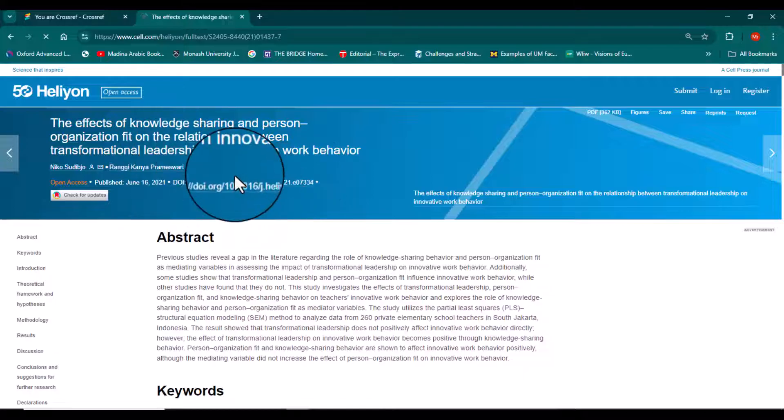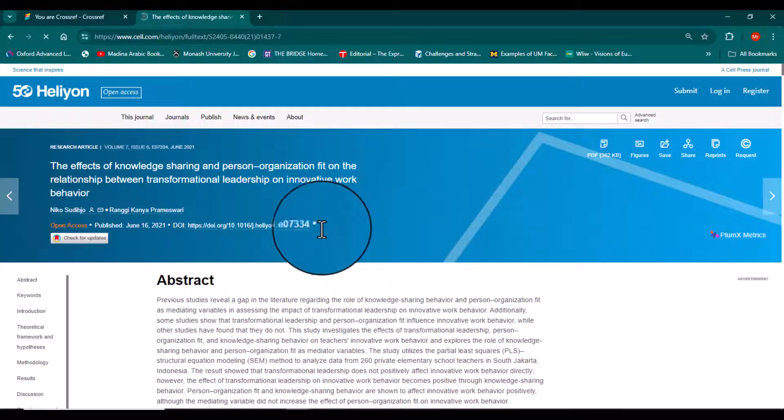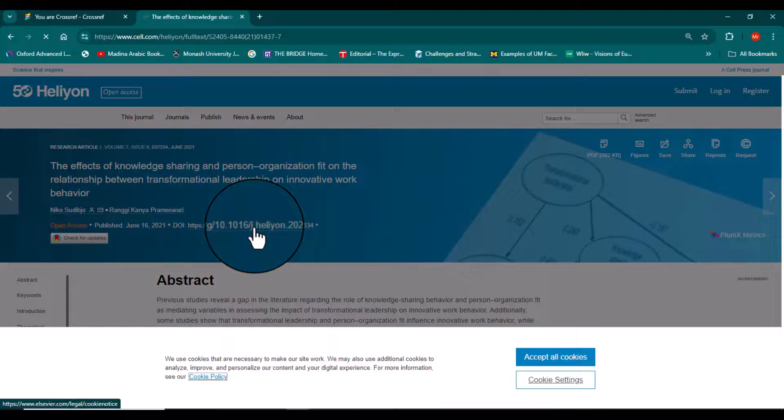DOI number is given just under the title of this article. From here we can copy and we can paste it in our document.